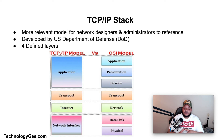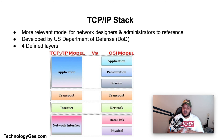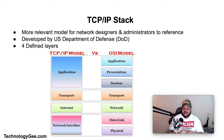The Internet Layer maps to layer three (the Network Layer) of the OSI model and focuses on IP as the protocol to be routed through a network. The Transport Layer maps to layer four of the OSI model, and the two primary protocols found here are TCP and UDP. The Application Layer maps to layers five through seven — the session, presentation, and application layers of the OSI model.